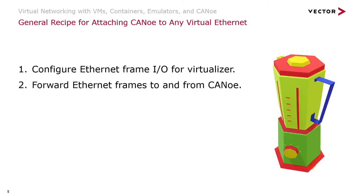Enough of scoping. Let's start with a very simple recipe. Whenever you want to establish a virtual Ethernet connection between CANU and any other environment, you have to consider two points. First, how to get Ethernet frames in and out of the virtualization tool. Second, how to forward these frames to and from CANU. Although the recipe seems trivial, systematically reflecting both questions is the key to understanding what works out and what doesn't.